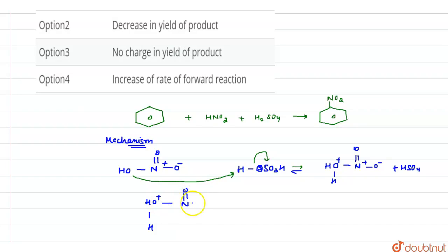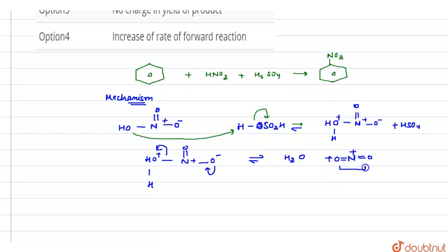O positive... a series of rearrangement steps occur due to which formation of water and formation of this electrophile occurs. And after that, this electrophile will attack on the benzene ring. This is the benzene ring and this electrophile attack takes place.